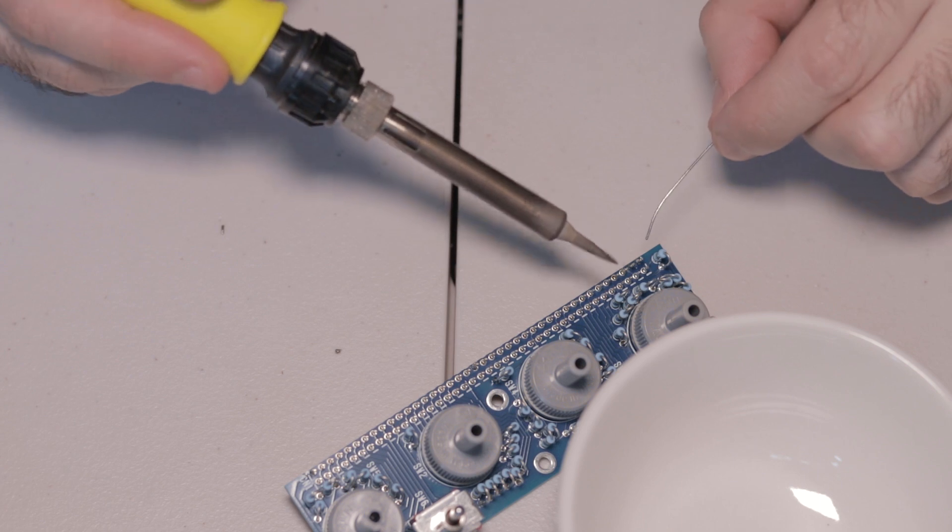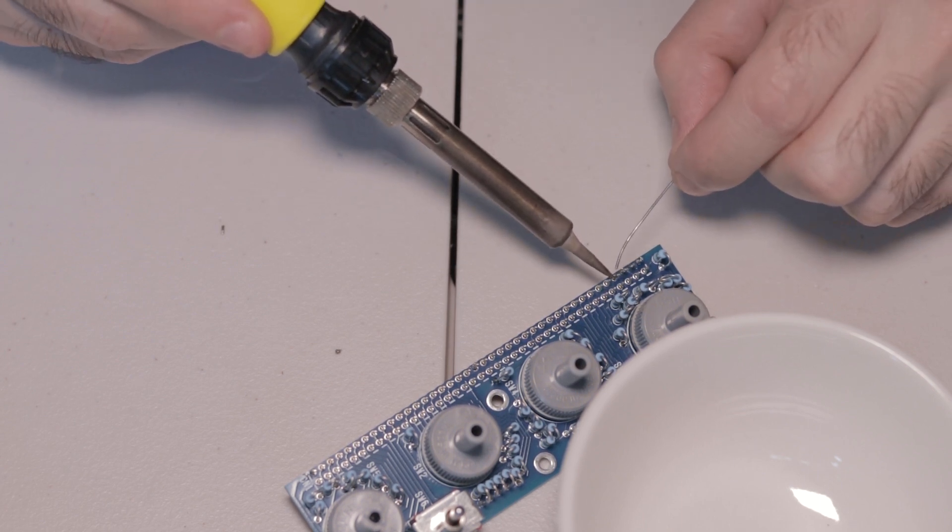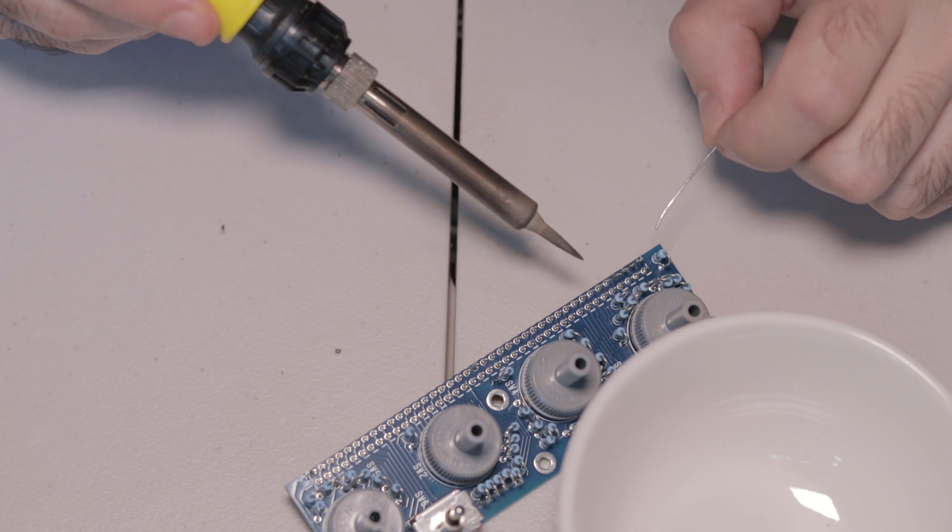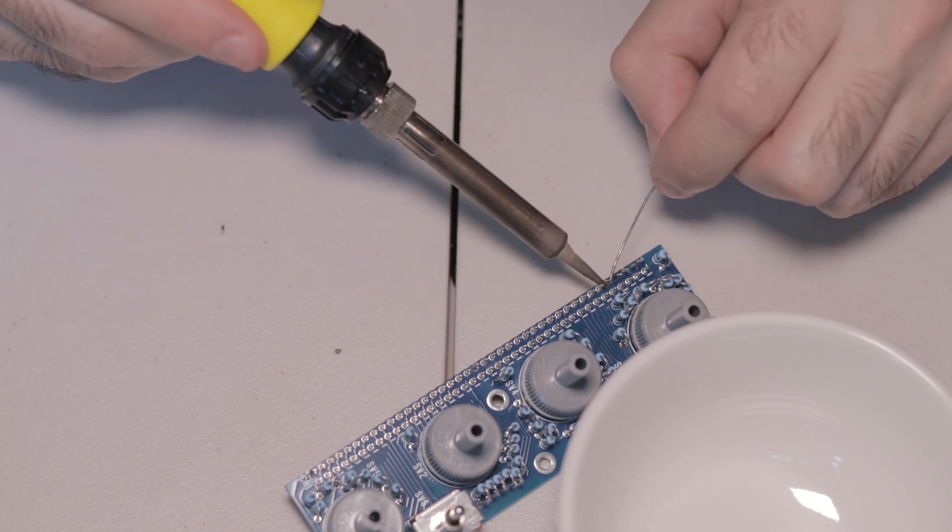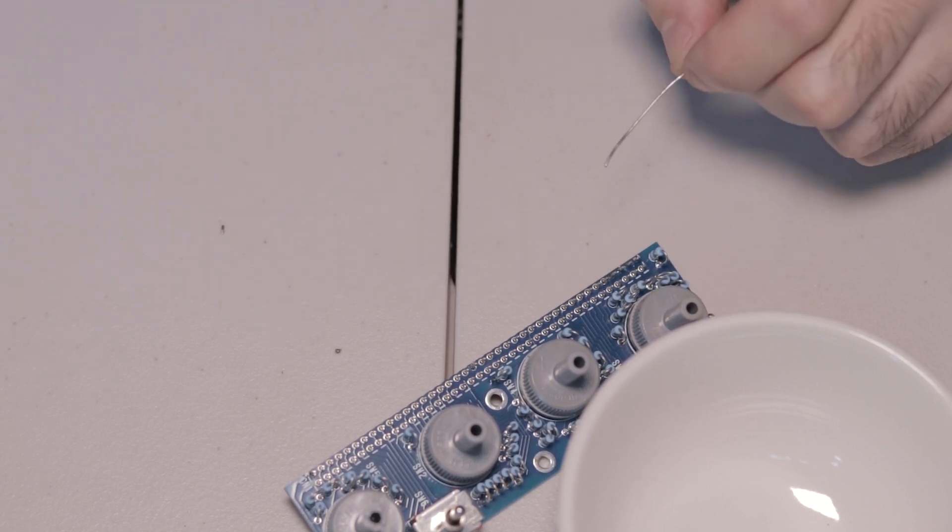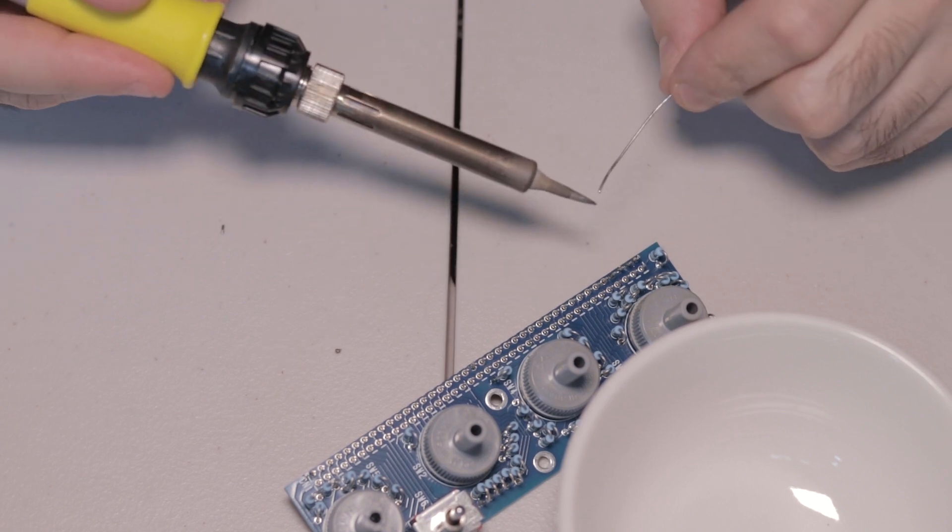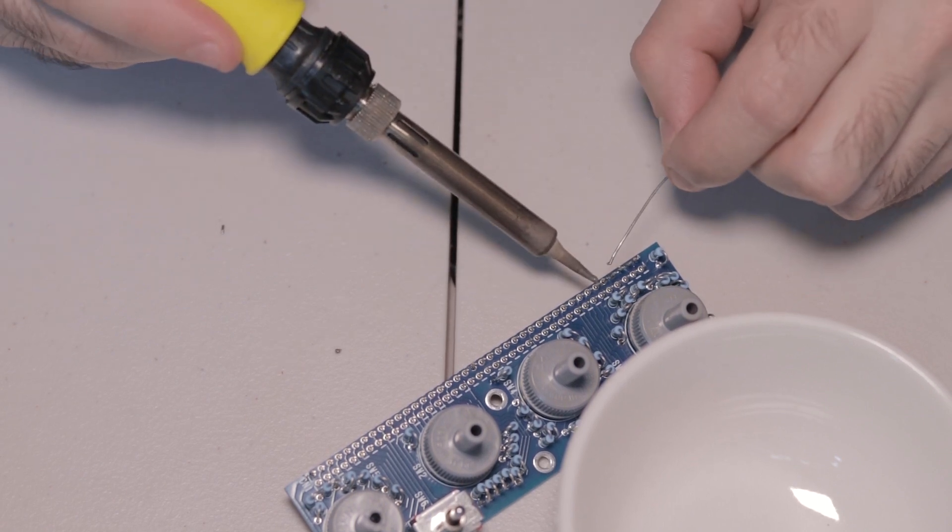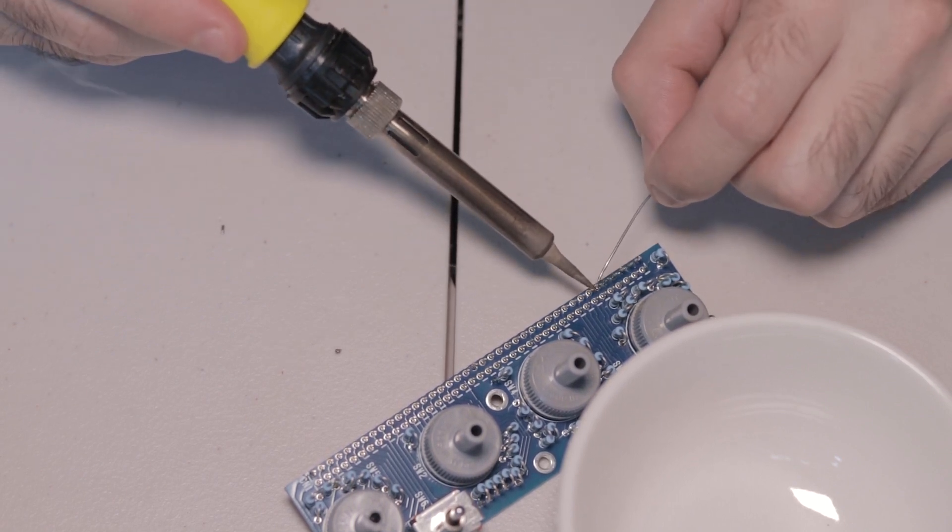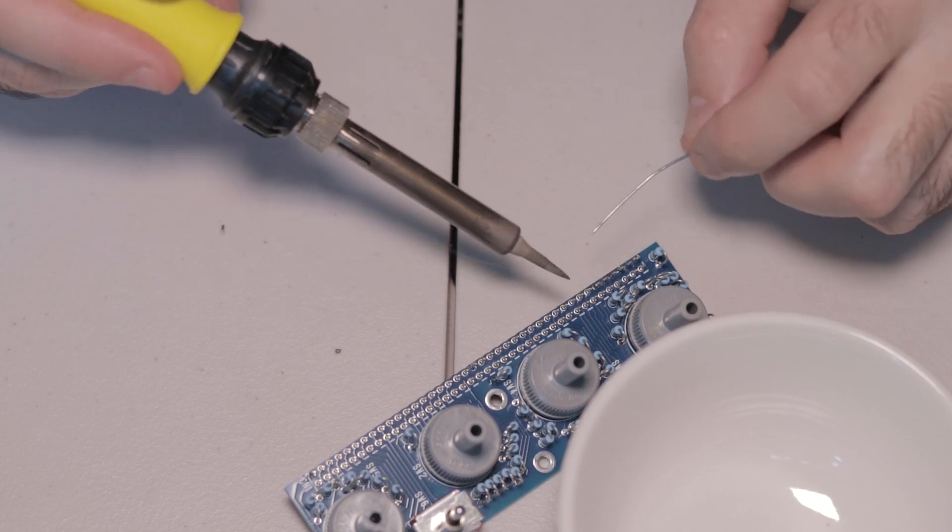So just hold that header in place, solder a leg on each side in the middle, and that will keep it nice and flat at a right angle on the board, so you keep the orientation correct. If you don't get this nice and square and flat, it'll be hard to join this daughter board to the motherboard later on, so make sure you get that right.